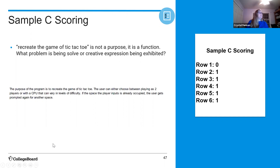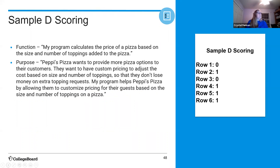Moving quickly through samples C and D — both have the function-versus-purpose issue. In sample C, 'creating the game tic-tac-toe' is not a purpose, it's a function. In sample D, 'my program calculates the price of pizza' is also a function. A better purpose I wrote: 'Pepe's Pizza wants to provide more options for customers with custom pricing to adjust cost based on size and toppings so they don't lose money on extra topping requests.' That gives the why — explaining why we need to do this.